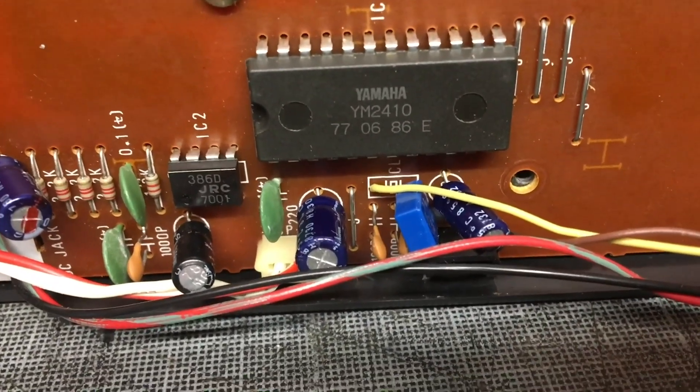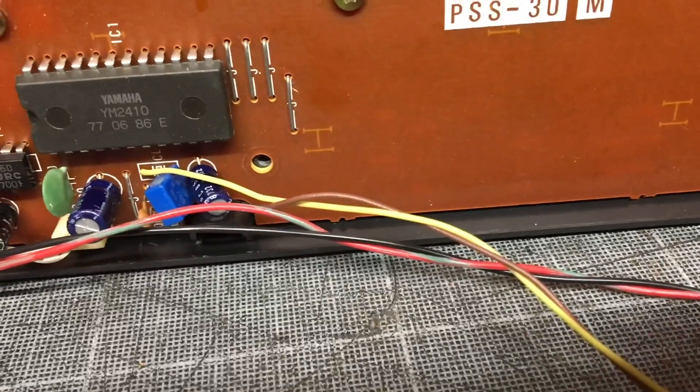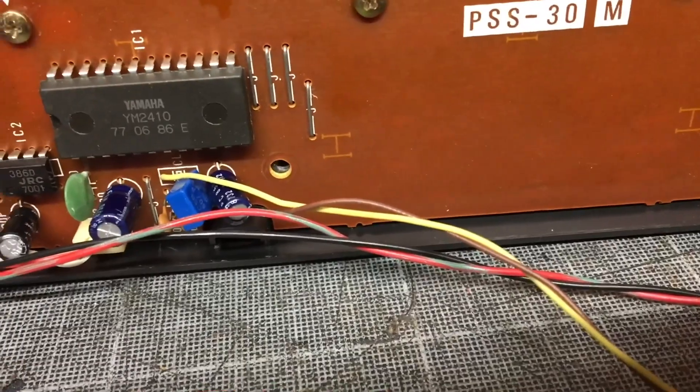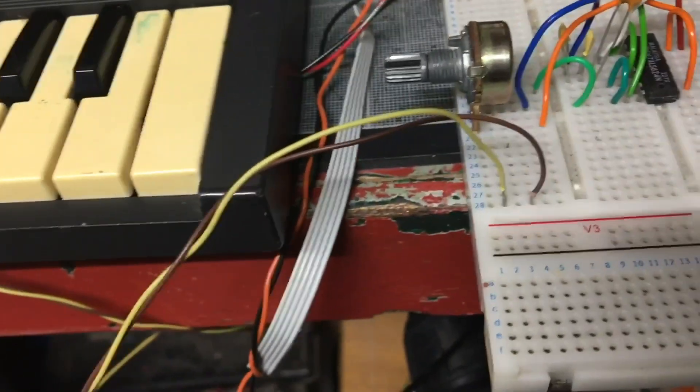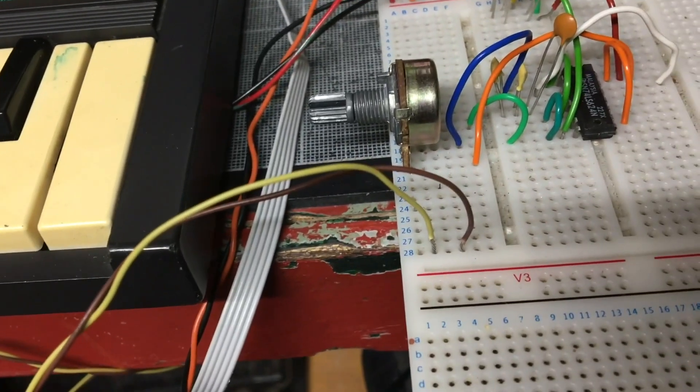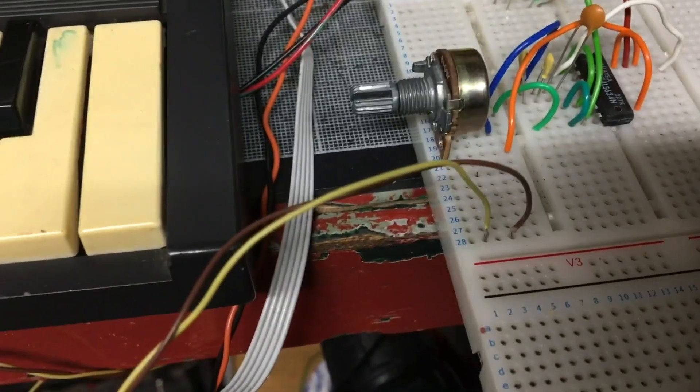As you can see here I disconnected the crystal, the blue thing, and I put the yellow cable. Then there is a brown cable that goes to the disconnected leg of the crystal so I can put a switch in between and choose between the two. At the moment it's playing on the original crystal, so the original clock.